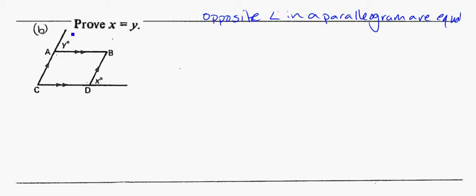So if I look at this part of the shape first, I see angles on a straight line. And I might be able to say that angle CAB, this one here, CAB, is equal to 180 degrees minus y. Because angles on straight line equal 180 degrees.